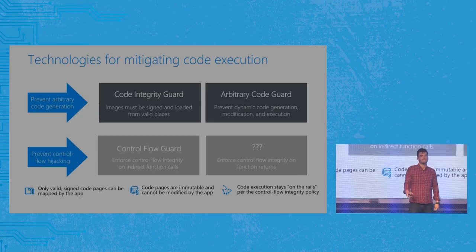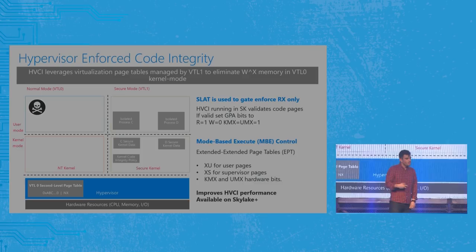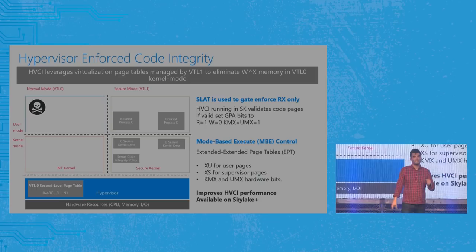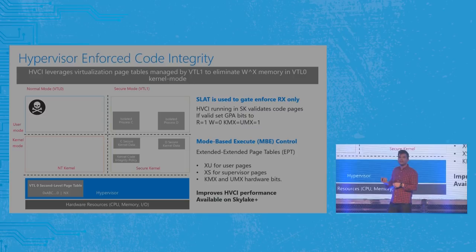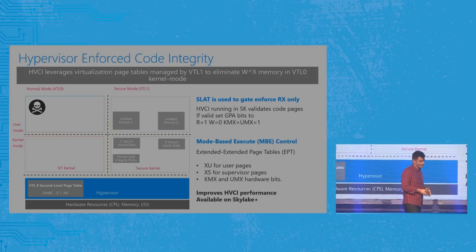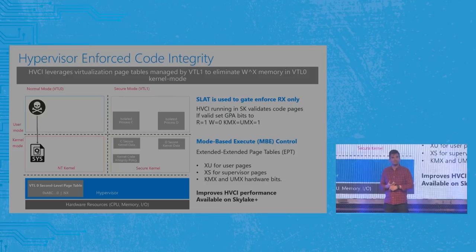What we introduced with Windows 10 is what we call Hypervisor Enforced Code Integrity — HVCI. This guarantees that kernel images mapped in the Windows kernel have a policy applied to them. When an attacker wants to load a driver into a system with HVCI enabled, the hypervisor first takes control.